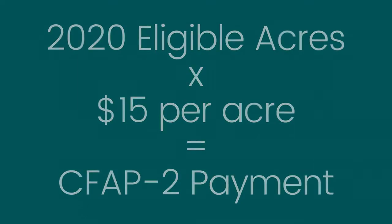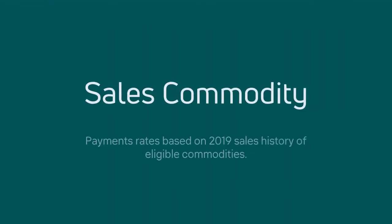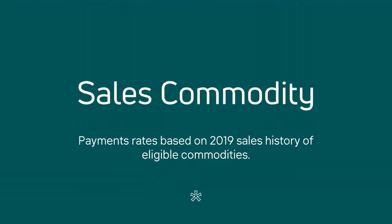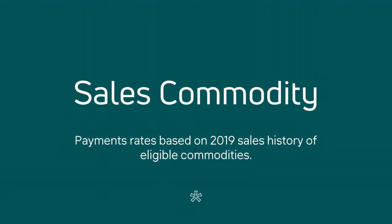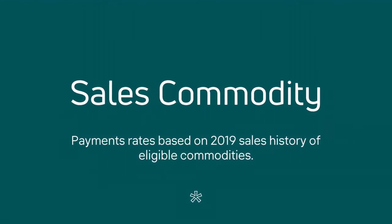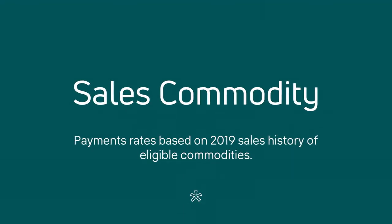The last payment calculation method is called sales commodity. This is an important new component of CFAP II, as the payments are based on a farmer's sales history. This may make CFAP II more accessible for farmers who produce a wide variety of crops, as the payment is based on total sales and not the production amounts of each individual commodity.